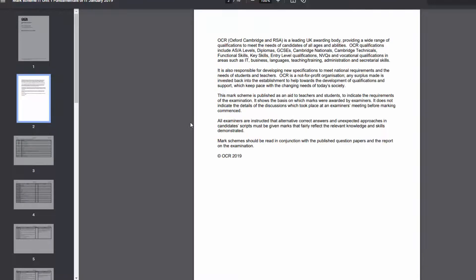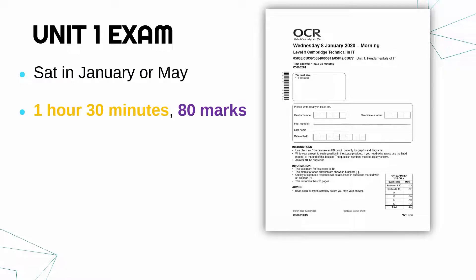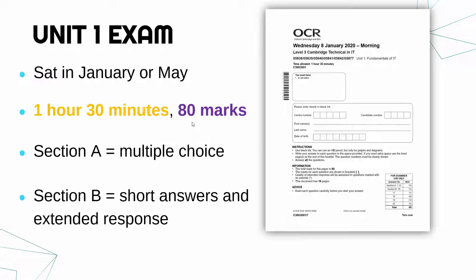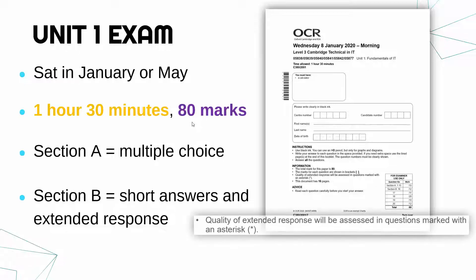Going back to key details of unit 1: you'll sit it either in January or May, depending on what your teacher decides is best. The paper is an hour and a half and worth 80 marks. At roughly a minute per mark, you have about ten minutes spare at the end to check your work. There are two sections: section A is multiple choice worth 15 marks — don't underestimate these, they're not easy — and should take about 10–15 minutes. Section B has short answers and extended response questions where you write your answers.